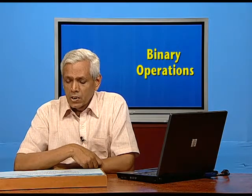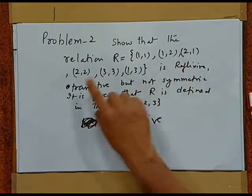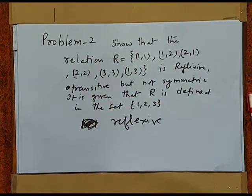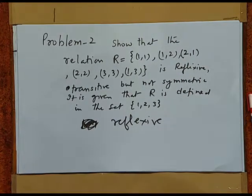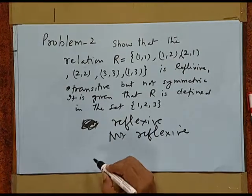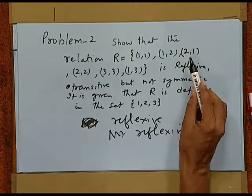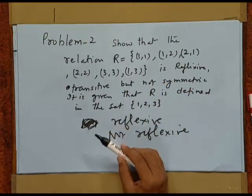Let us take one more problem. Show that the relation R = {(1,1),(1,2),(2,1),(2,2),(3,3),(1,3)} defined in the set {1, 2, 3} is reflexive and transitive but not symmetric. Here (1,1), (2,2), and (3,3) all belong to R, so every element is related to itself — it is reflexive. It is not symmetric because (1,3) belongs to R but (3,1) does not. It is transitive because (1,2) and (2,1) belong to R, and (1,1) as well as (2,2) belong to R.